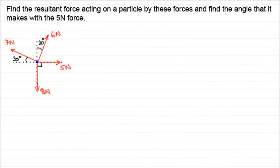Hi. This is an example that you might like to try. It follows up what we were talking about in an earlier tutorial where you've got more than two forces acting on a particle. What I'm asking you to try is find the resultant force acting on the particle by these forces and find the angle that it makes with the 5N force. So if you'd like to have a go, just pause the video, come back when ready and check your working out with mine.